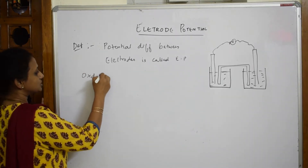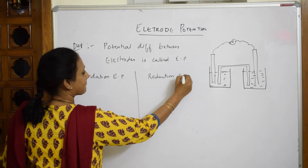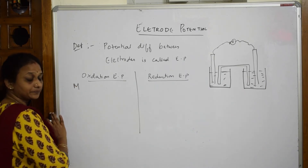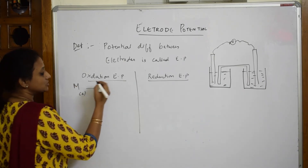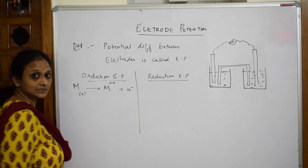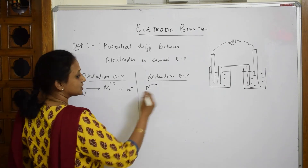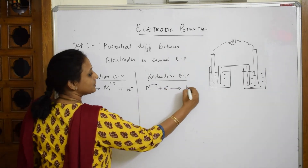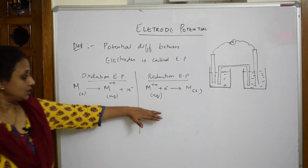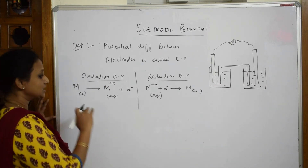One type is oxidation electrode potential (E.P.) and the other is reduction electrode potential (E.P.). For oxidation E.P., the general reaction is: a metal in solid form loses one or more electrons and becomes M^(n+) in aqueous solution. For reduction E.P., M^(n+) in aqueous solution picks up electrons and forms M solid.